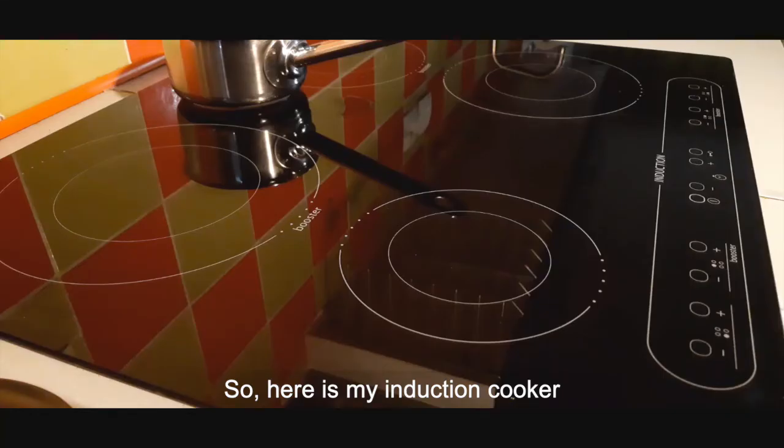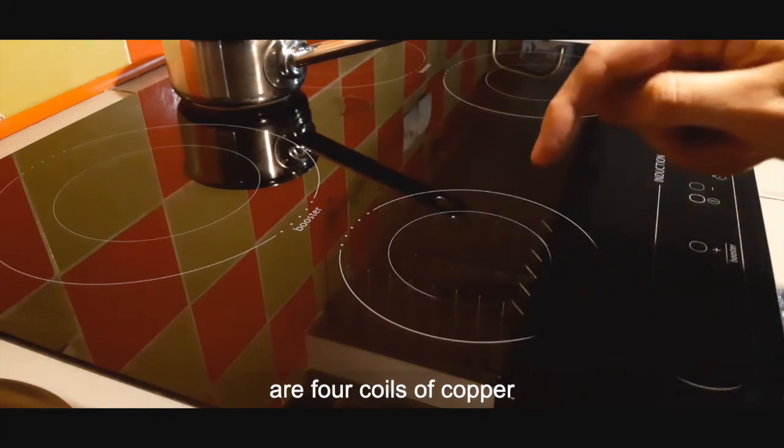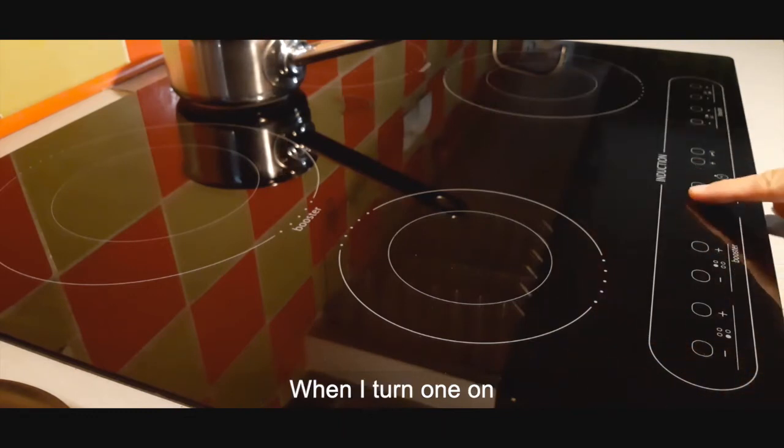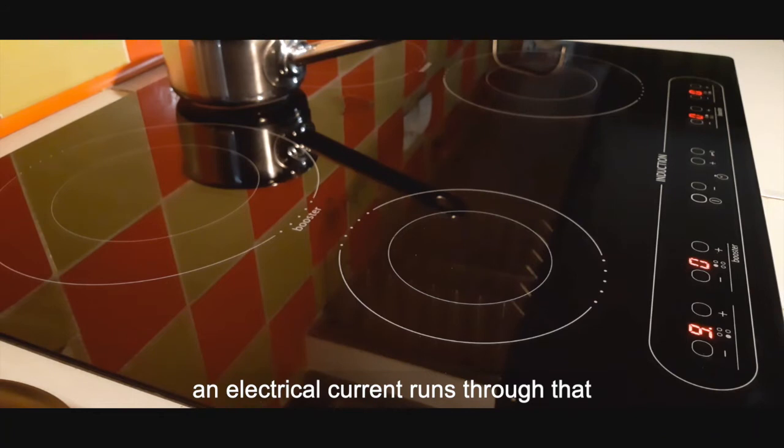So here is my induction cooker. Now beneath this glass surface are four coils of copper, one for each of these hobs. And when I turn one on, I'm going to turn this one on here up to the maximum power of nine, an electrical current runs through that coil of copper generating an electric field.